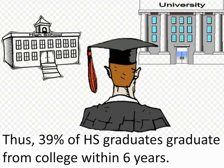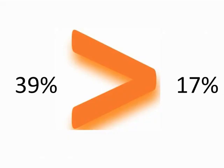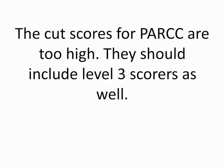Thus, in my analysis, if 66% of high school graduates enroll in college and then 59% of these high school graduates graduate college within six years, then an estimated 39% of high school graduates eventually graduate from college within the six-year timeframe. I would assume this means they are college-ready if these high school graduates graduated from college within six years. This statistic is far more than the 17% of Illinois students who meet or exceed expectations on PARCC. I think the cut scores are not set correctly.